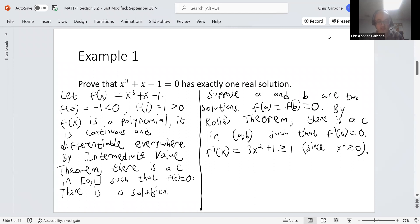But we could see from this that f prime of x can never be zero ever, because it's always greater than or equal to one. So this gives us a contradiction. So we cannot have two real solutions, just the one.